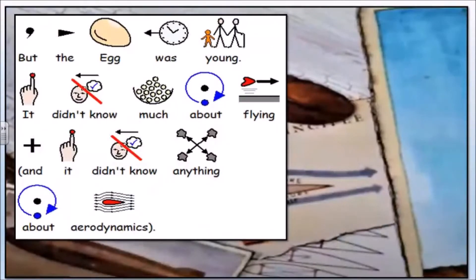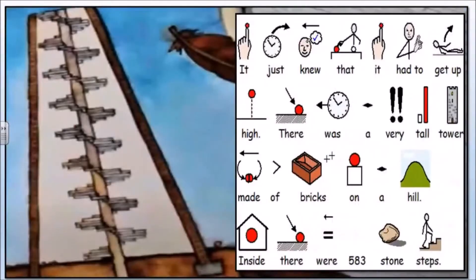But the egg was young and it didn't know much about flying and it didn't know anything about aerodynamics. It just knew that it had to get up high. There was a very tall tower made of bricks on a hill. Inside there were 583 stone steps.